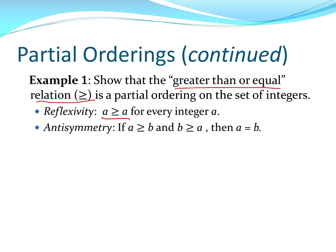Antisymmetry — remember the definition: if a is greater than or equal to b and b is greater than or equal to a, then a equals b. That is true for this relation.